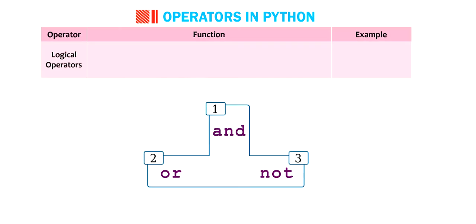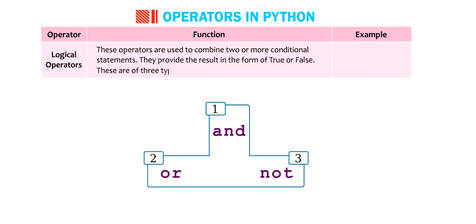Operator. Logical operators. Function. These operators are used to combine two or more conditional statements. They provide the result in the form of true or false. These are of three types.